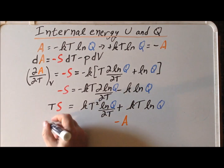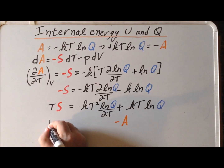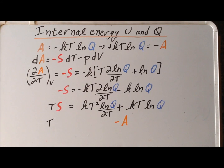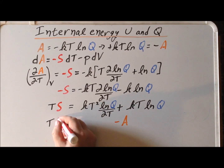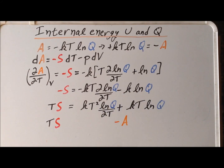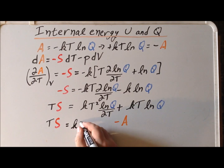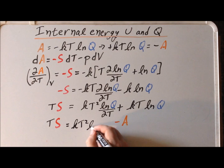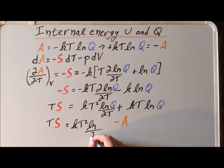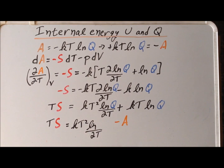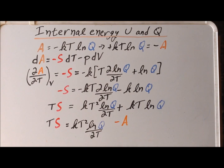So let's write down what we have here: T times the entropy is equal to kT² times the derivative of the natural log of the canonical ensemble partition function Q minus the Helmholtz energy A.